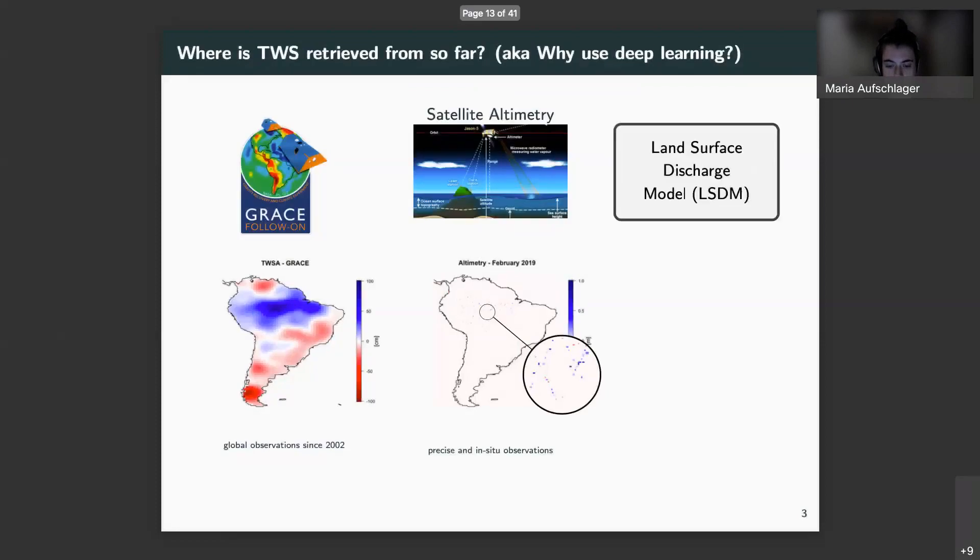As mentioned before, there are as well numerical hydrological models simulating terrestrial water storage. Here in the study, the land surface discharge model is being used. It is regularly simulated and features small-scale patterns as well as rivers. But, as every model, it is biased, and it is especially for high resolution known to overestimate rivers.